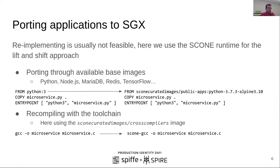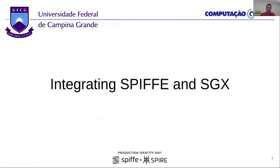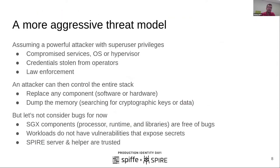In another way to do that, you could have a microservice written in another language, like C or even Rust, and then recompile it using the toolset with another base image. We follow this lift-and-shift approach because we think it's more realistic.